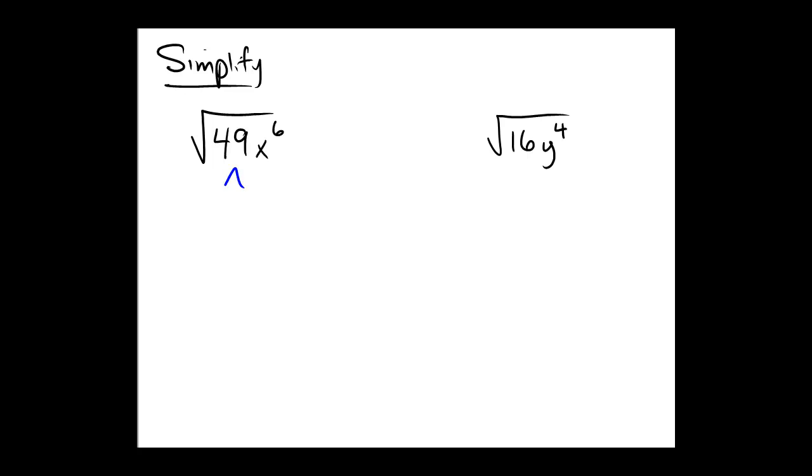49 will break down into a 7 times a 7, and x to the 6th would break down into an x, x, x, x, x, x. Right, 49 is 7 times 7, x to the 6th is 6 copies of x all being multiplied together.